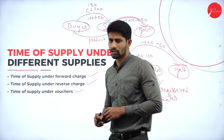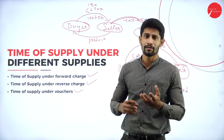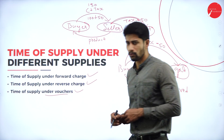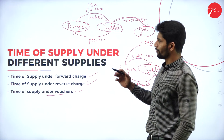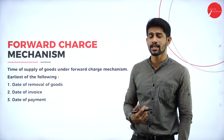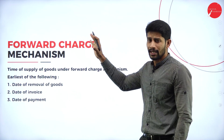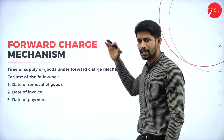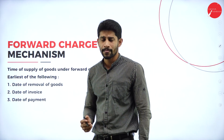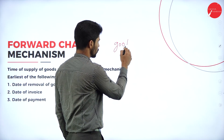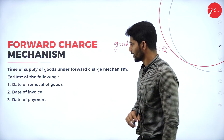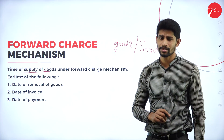The third type is time of supply under vouchers — for example, vouchers you receive from malls or gift coupons. How to find out the time of supply with respect to purchasing of vouchers will be covered when we solve the relevant problem. Now let us solve the problems with respect to forward charge mechanism. Under forward charge mechanism, computation of time of supply applies separately for goods and for services, and the rules are different for each.